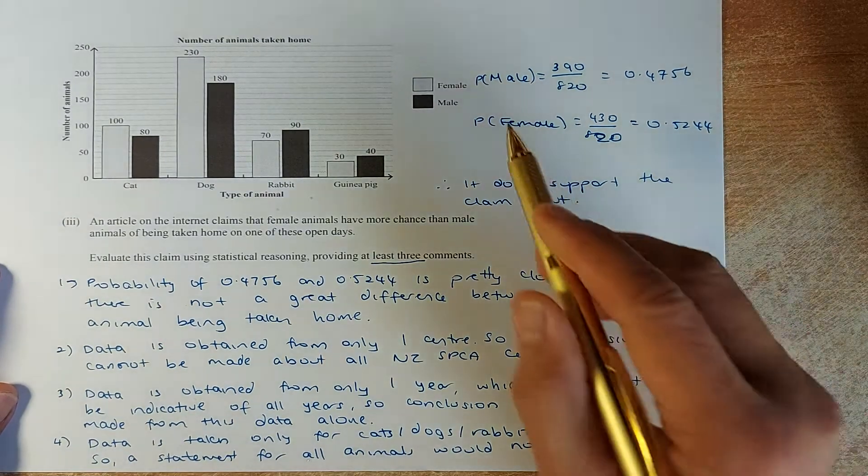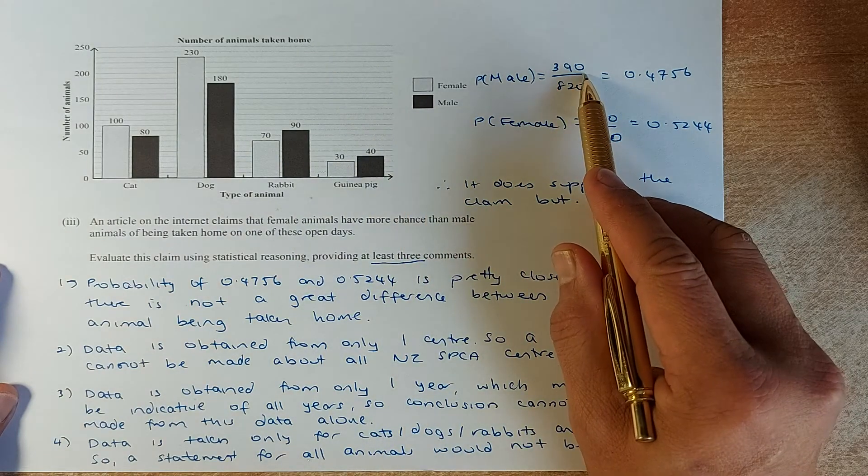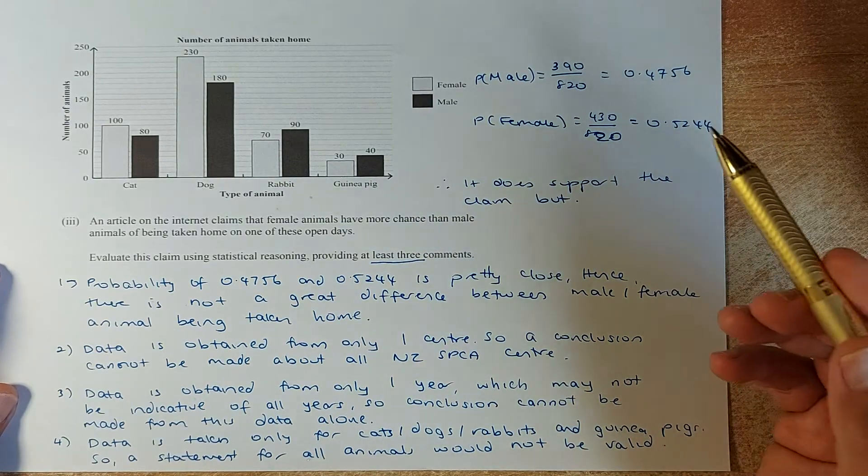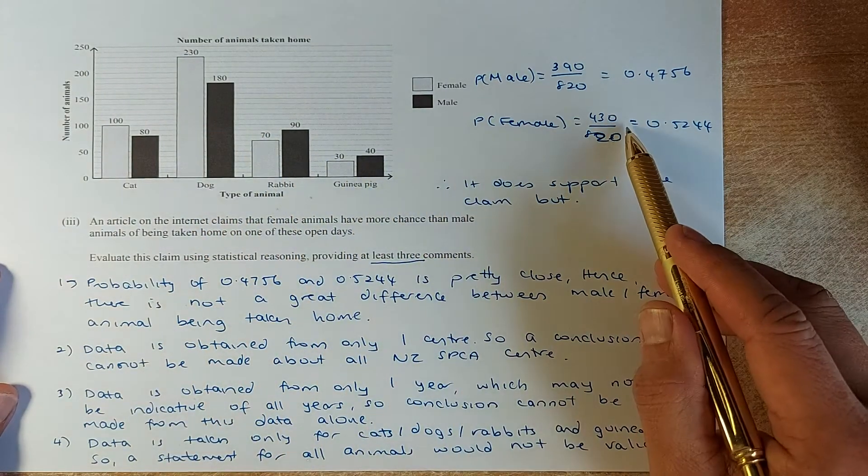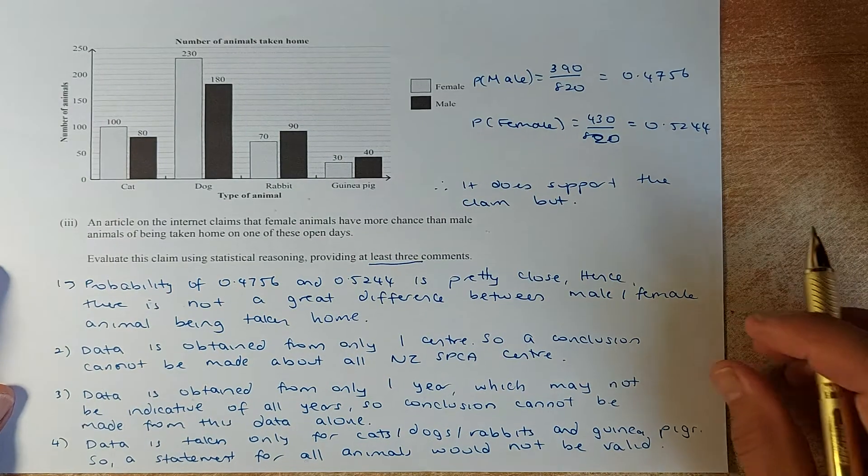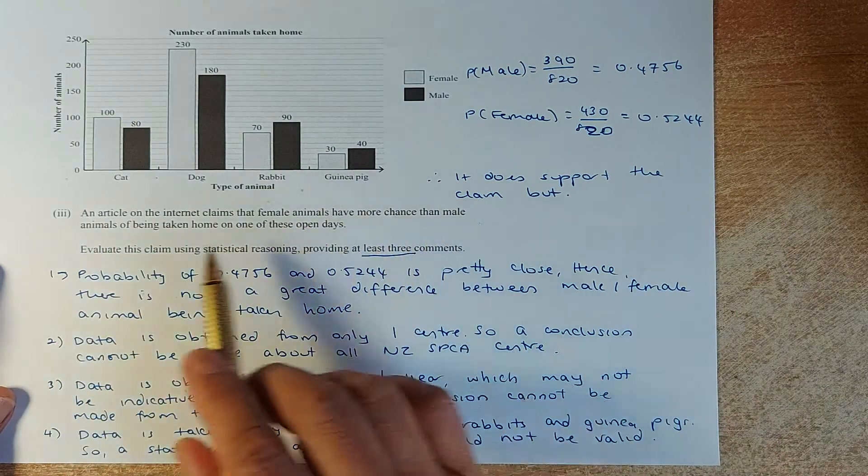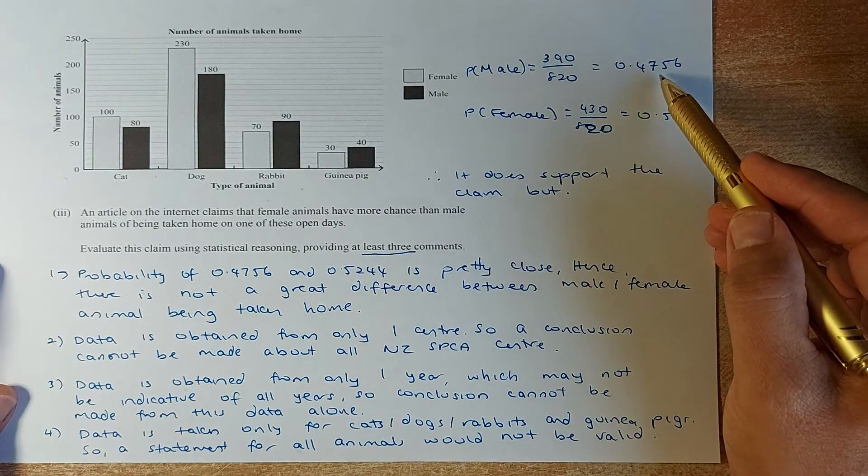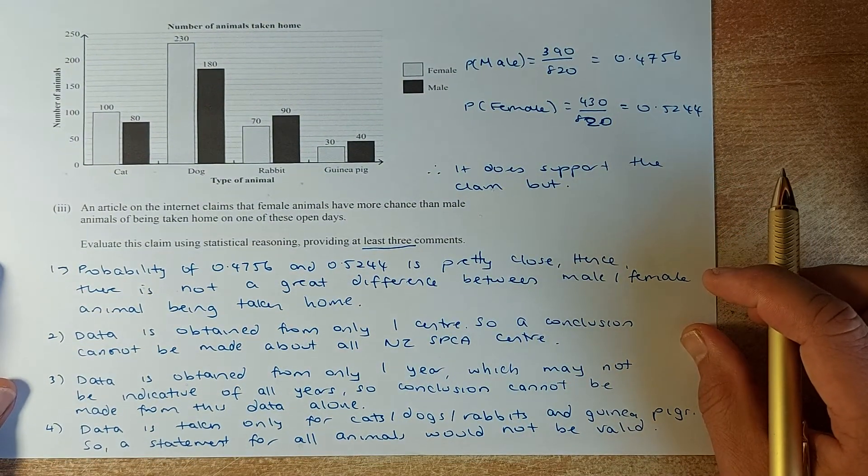First you calculate number of males. The dark colour: 80 plus 180 plus 90 plus 40. The total will come up to 390 out of the total of 820, and it comes up to 0.4756. Similarly, for the female, you add 100, 230 plus 70 plus 30, and it comes up to 430 out of 820, and it comes up to 0.5244. So technically, the claim that a female has more chance of being taken is right because the female has a chance of 52.44% compared to the male, which is 47.56%. So that is the first answer you're going to put down in your exam.